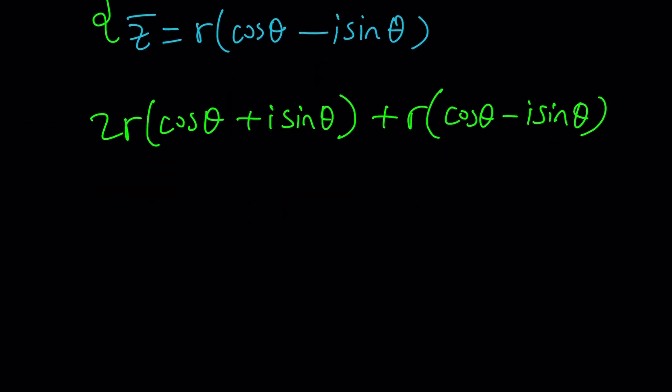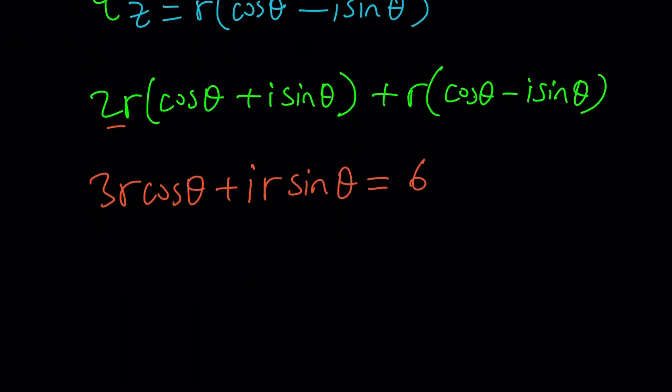We're going to get 2r cosine theta plus r cosine theta. That is going to be 3r cosine theta. Now we're going to get 2ri sine theta and minus ri sine theta. That's going to give us plus ri sine theta.